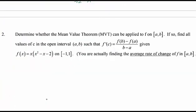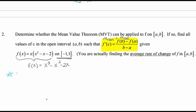Now let's determine whether the Mean Value Theorem can be applied. Given this function, I'll rewrite it first: x³ minus x² minus 2x, on the interval negative 1 to 1. Check two key things: am I continuous, and am I differentiable — only on that interval? This is a polynomial, so yes to both. I can go ahead and find the c value where this occurs.